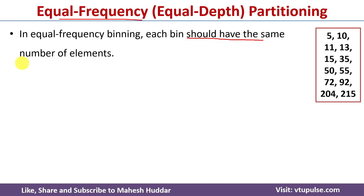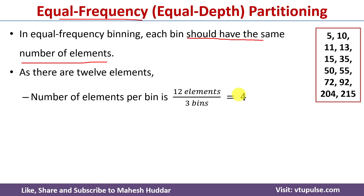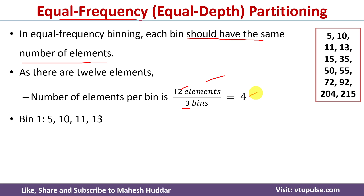In the equal frequency partitioning method, each bin should have the same number of elements. The question is how to find the number of elements. We can find it using this formula: total number of data points divided by total number of bins. Here total number of data points are 12 and total number of bins are 3, so 12 divided by 3 is 4. It means each bin contains four data points.